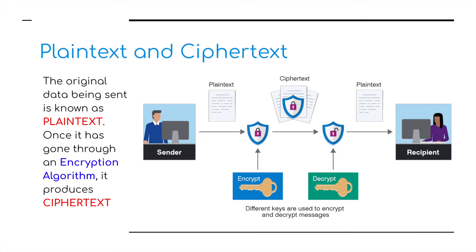We've got an example here. We've got some plain text that we don't want anybody else to see other than the recipient. So we put it through an encryption algorithm — we encrypt it — and turn it into what they call cipher text. Then, before the user receives it, it can be decrypted. We've got keys as examples here to show locking and then unlocking it. So we turn it from plain text to cipher text, and then back into plain text.